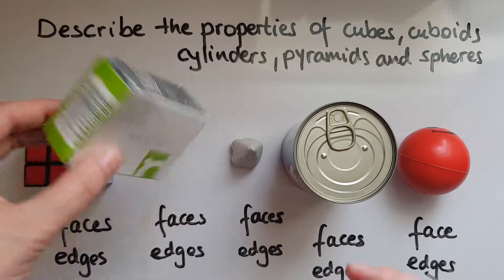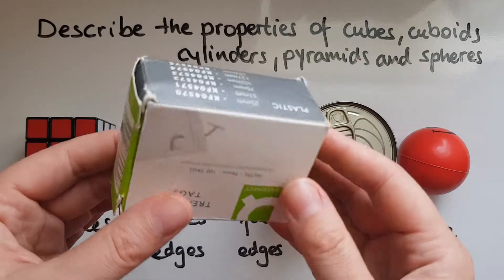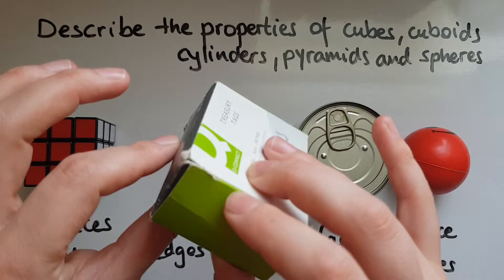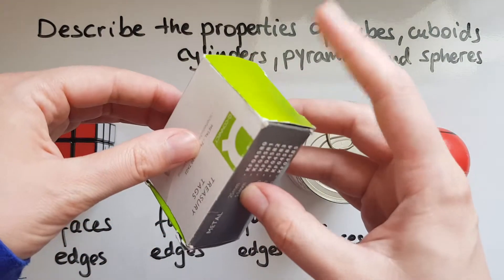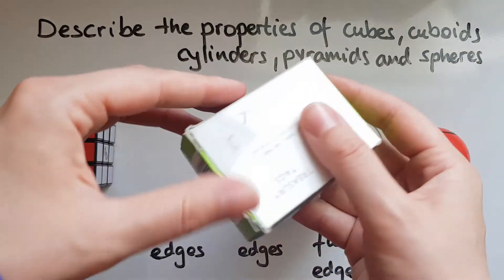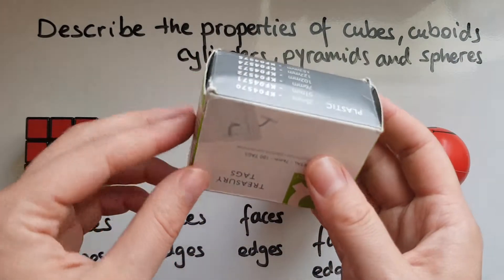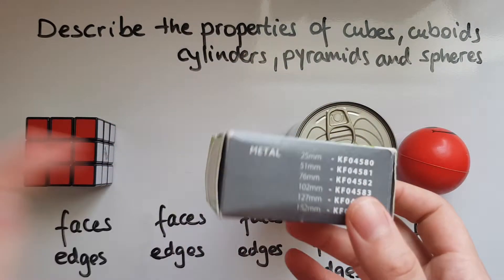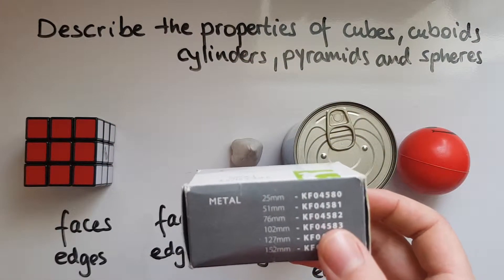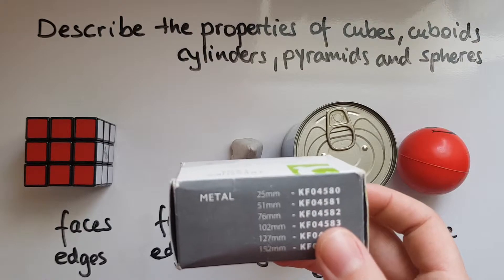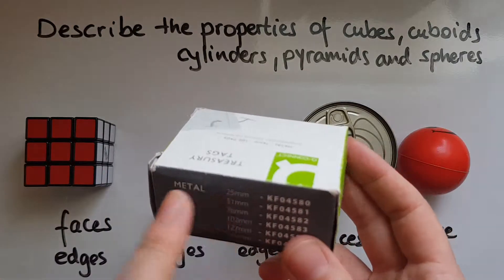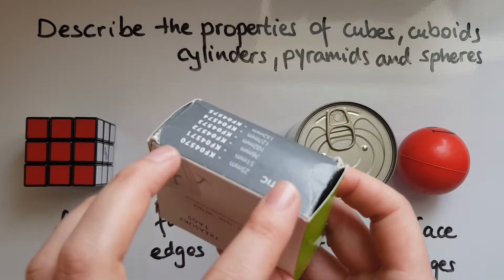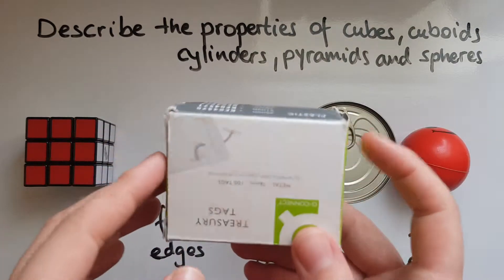What about a cuboid? Is it the same? Counting: one, two, three, four, five, six. So it's exactly the same, because cube and cuboid are very similar shapes. The only thing that changes is the length of some of the sides.